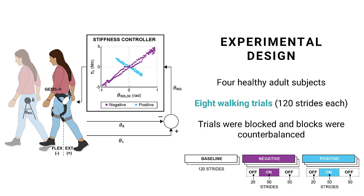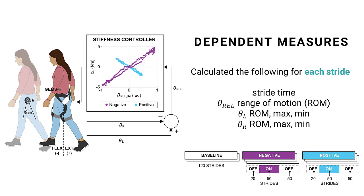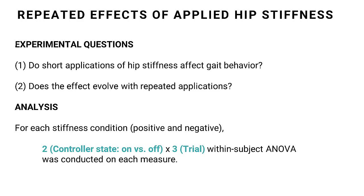After data collection, we calculated the following for each individual stride: the stride time, the range of motion of the relative angle between the two legs, as well as the range of motion of the right and left leg individually, and the maximum and minimum values of each leg independently.